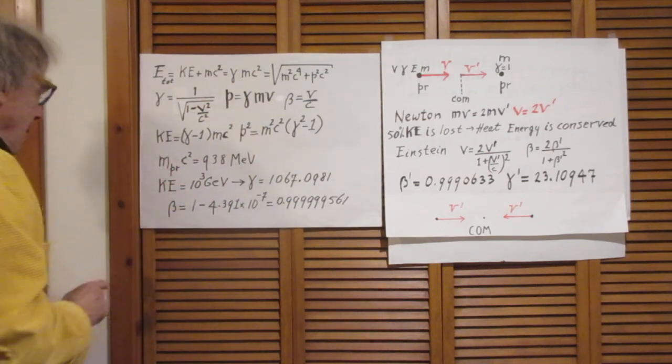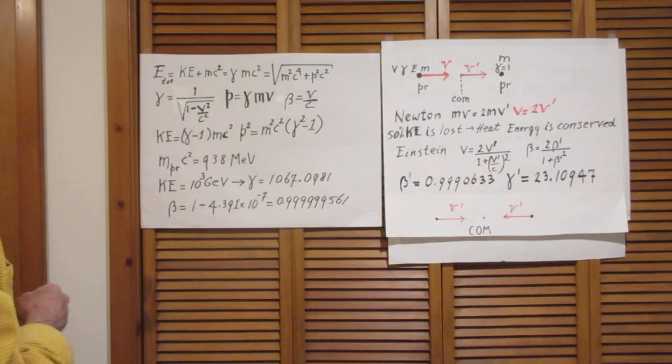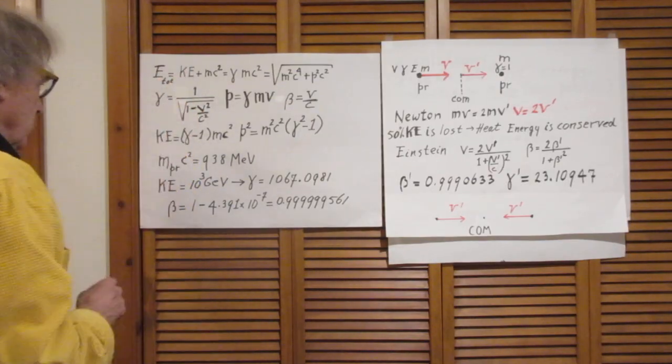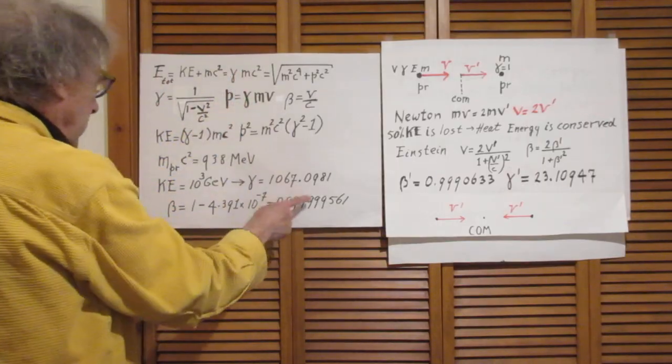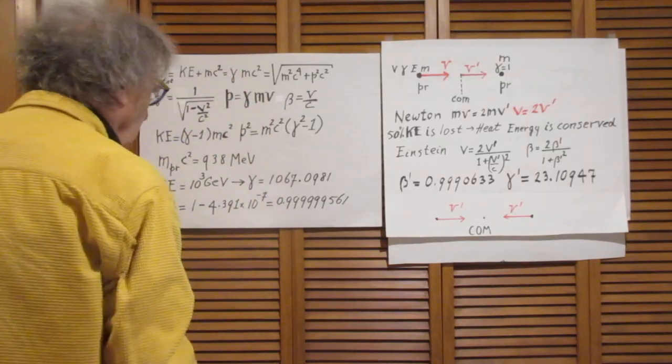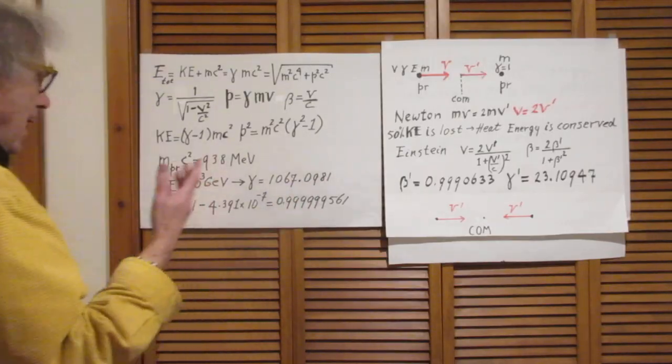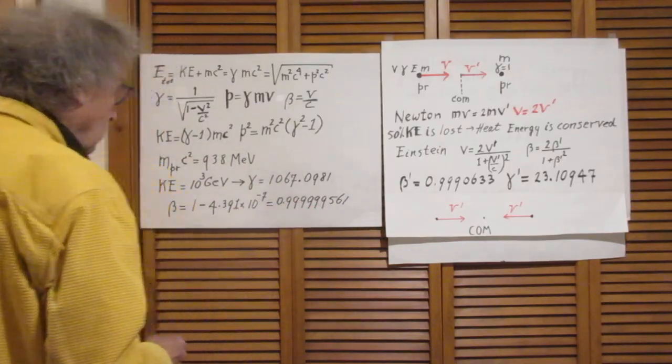The rest mass energy of a proton is 938 million electron volts. Our kinetic energy is 1000 GeV and it follows therefore immediately from this equation that gamma is this number. I give you 8 digits precision whereas 4 would be plenty.